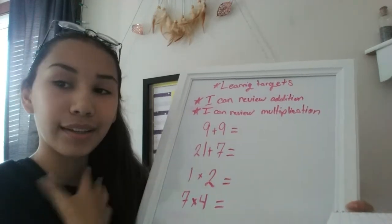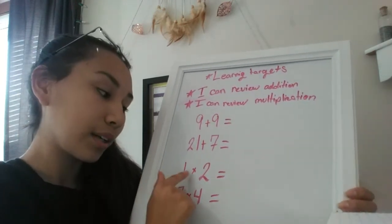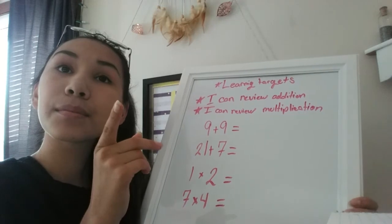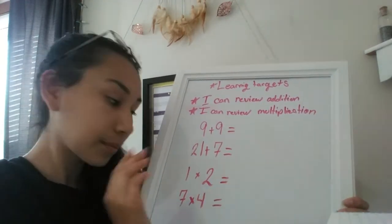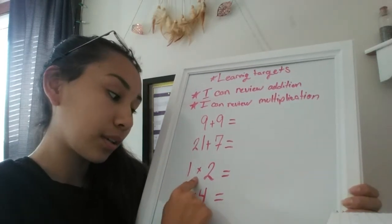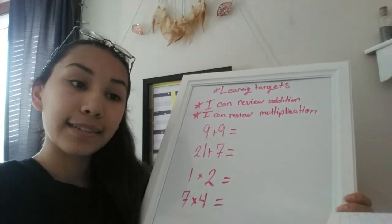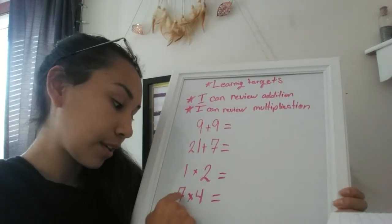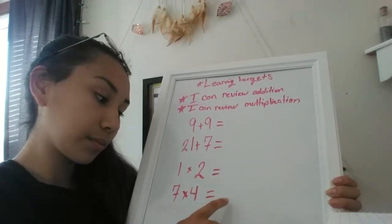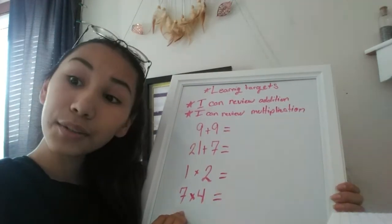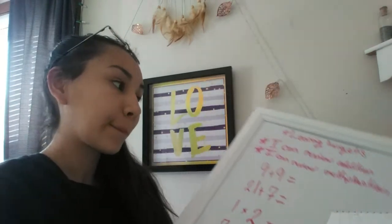But remember, don't call out — raise your hand until I call on you. Now can anyone tell me what one times two equals? Susan? Two is correct, because anything times one is the exact same number, so like seven times one is seven. Can anyone tell me what seven times four equals? You guys are very smart — what have you guys been eating for breakfast?